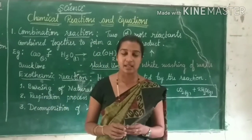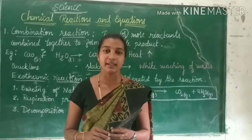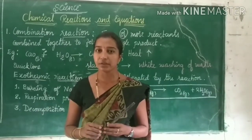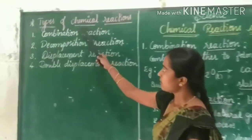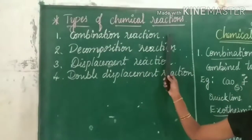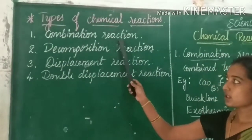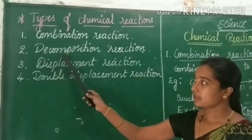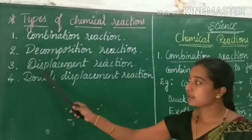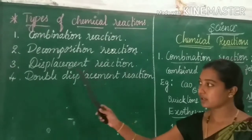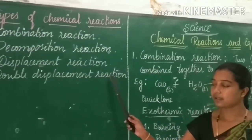In chemical reactions, breaking and making of bonds between atoms, reactions can be categorized into four types: the first type is combination reaction, second is decomposition reaction, third is displacement reaction, and fourth is double displacement reaction.